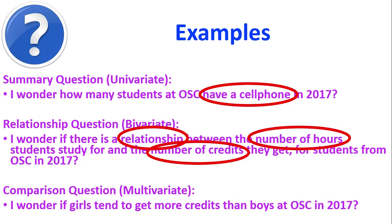And here's an example of a multivariate or comparison question. We are looking to compare the girls and the boys, so that's our qualitative variable. We're comparing girls and boys. And we're going to ask them and find out from them how many credits they each have. So these are two variables. One of them is what gender they are. The other variable is how many credits they have.